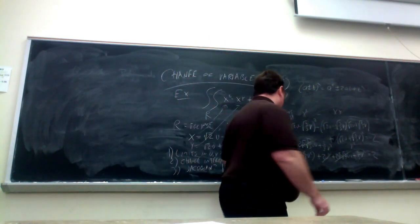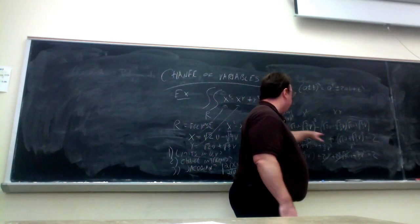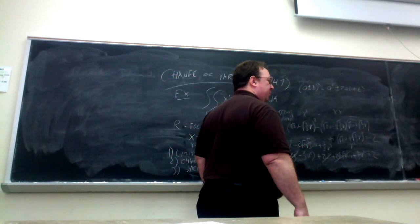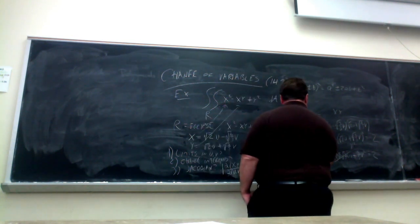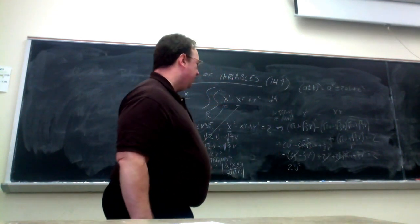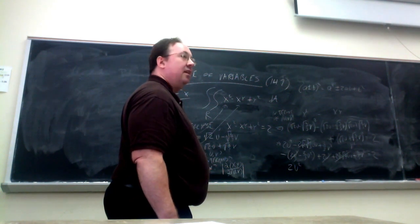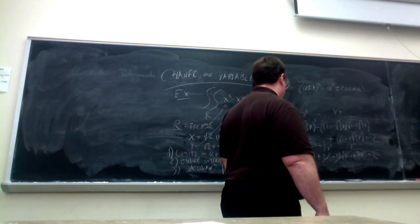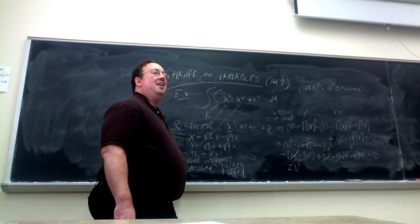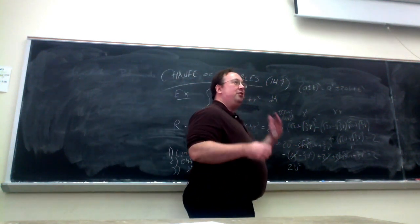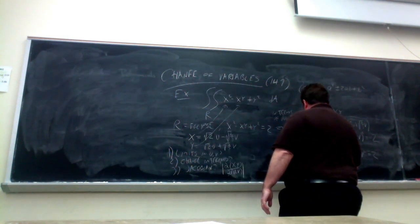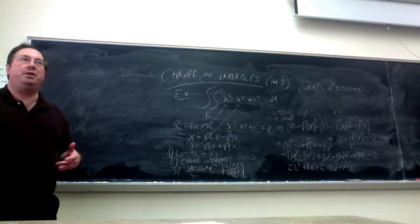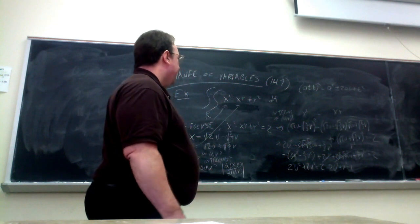Thankfully a lot simplifies. The uv cross-terms cancel since they appear with opposite signs. The 2u² terms: two have a plus sign and one has a minus, so combining gives 2u² + 2u² − 2u² = 2u². Similarly the v² terms combine to 2v². So we get 2u² + 2v² = 2, which means u² + v² = 1. Sure enough, we're transforming from the ellipse to the unit circle in u,v space.